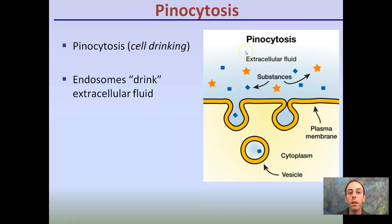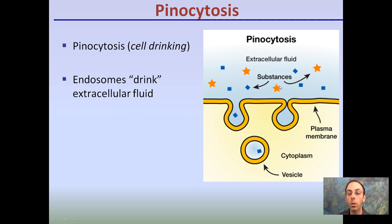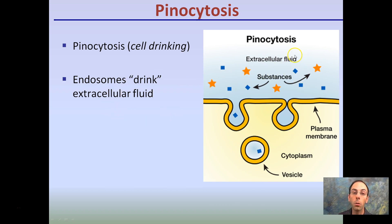Pinocytosis is cell drinking. Endosomes drink extracellular fluid by binding substances, pinching off, and taking in typically ions along with a lot of water. So pinocytosis involves a pinching of the membrane that creates a vesicle collecting extracellular fluid, typically ions along with water.